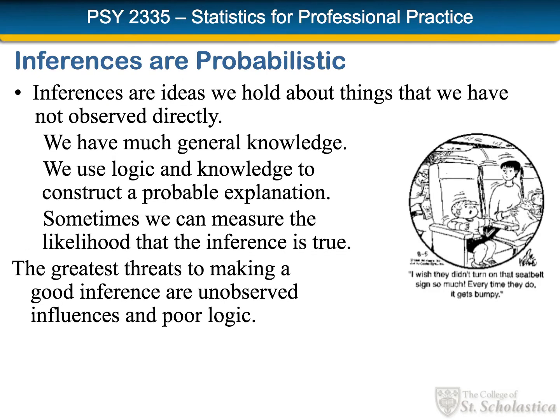Inferences are always probabilistic — we don't know them with certainty. They're ideas that we hold about things that we did not observe directly. We build our inferences from our general knowledge of how the world operates. Our logic and that knowledge are put together to construct a probable explanation, and there are times that we can measure the likelihood that the inference is true. Two of the greatest threats to making a good inference are unobserved influences and poor logic.